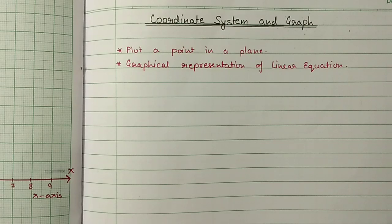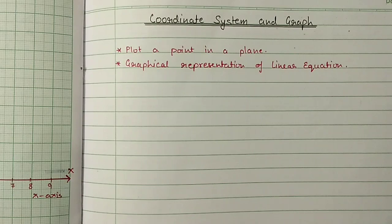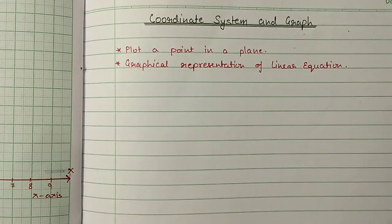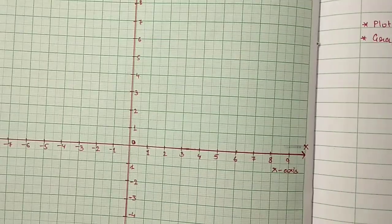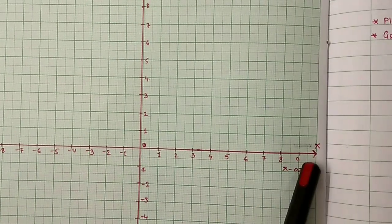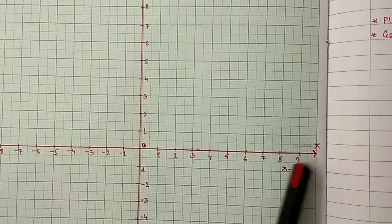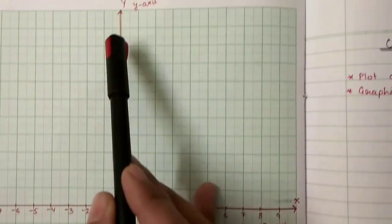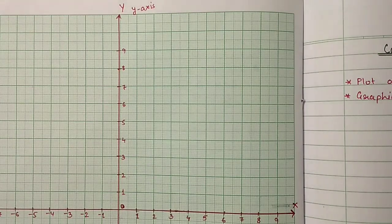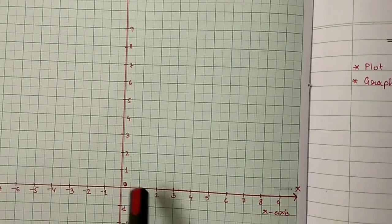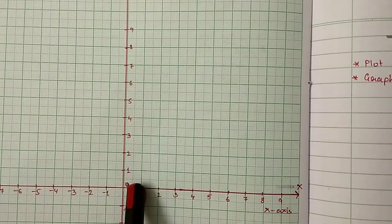The position of any point in a plane is always determined by two lines, and these two lines will be perpendicular to each other. The first horizontal line we will call the x-axis, and the other vertical line we will call the y-axis. The angle between these two lines will be 90 degrees.